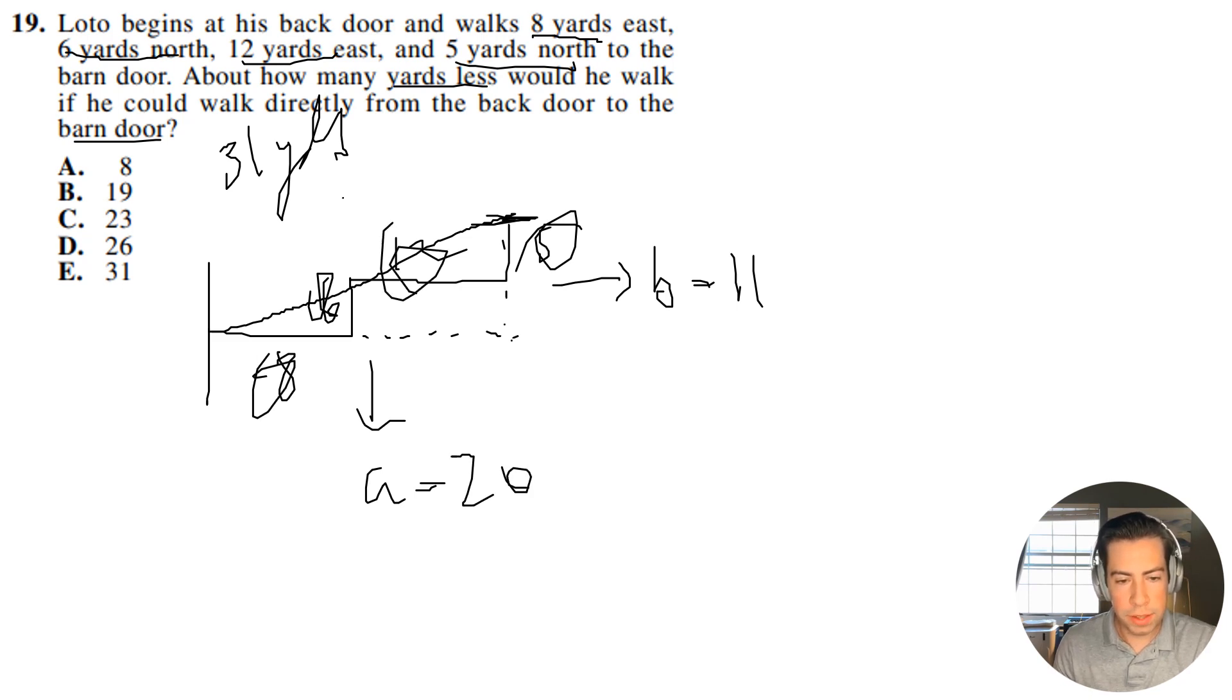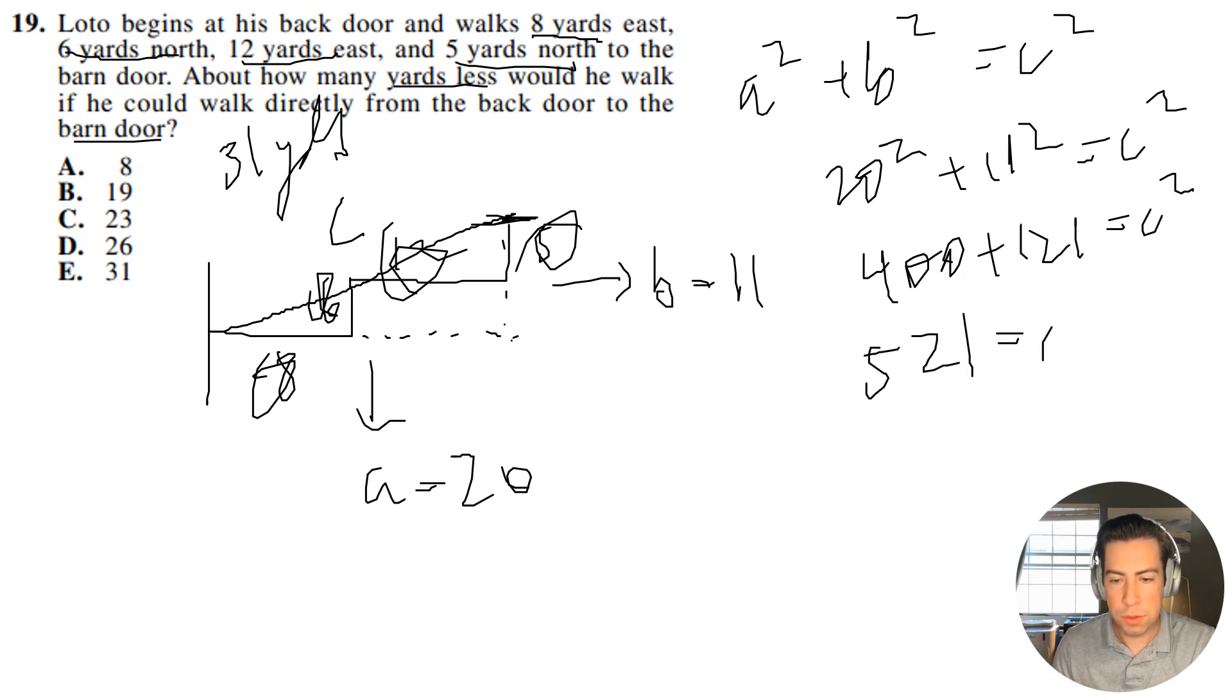And we know that the hypotenuse is going to be C. Now in order to calculate C, we're going to need to use the Pythagorean theorem. So it's going to be A squared plus B squared equals C squared. And that is going to be 20 squared plus 11 squared equals C squared. So we're going to get 400 plus 121, that's going to be equal to C squared. Then we're going to get 521 equals C squared, and we can take the square root of both sides.